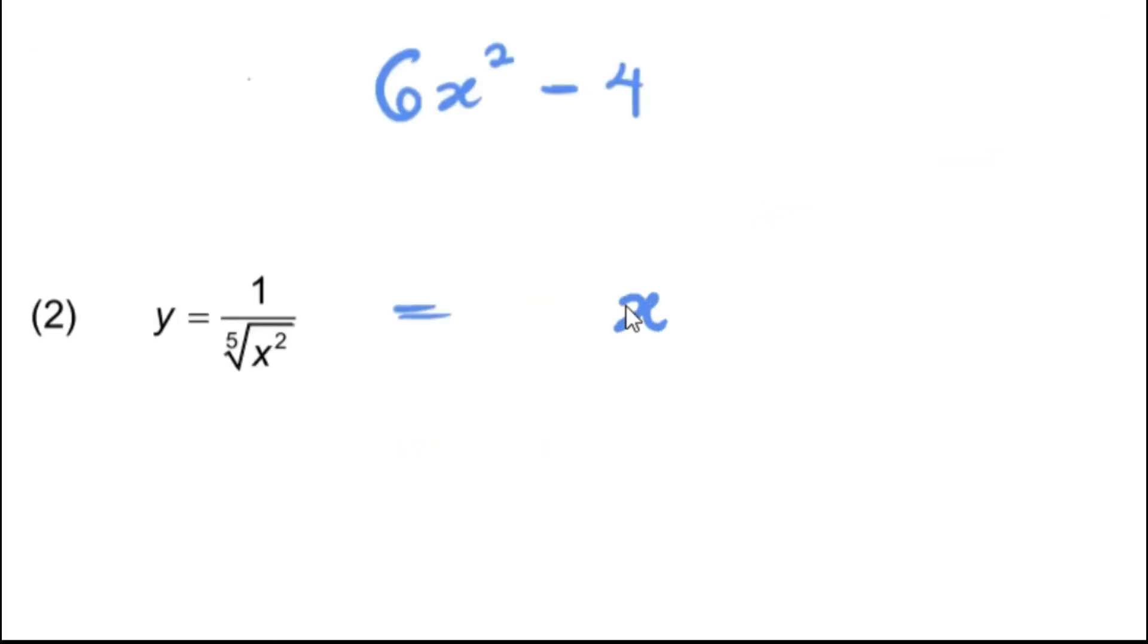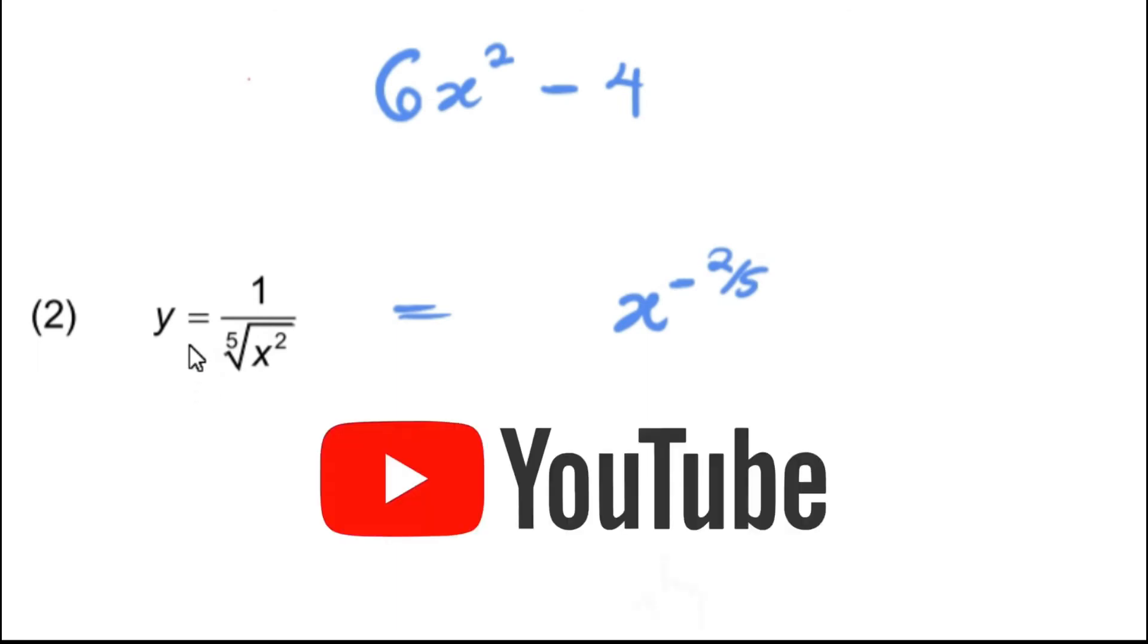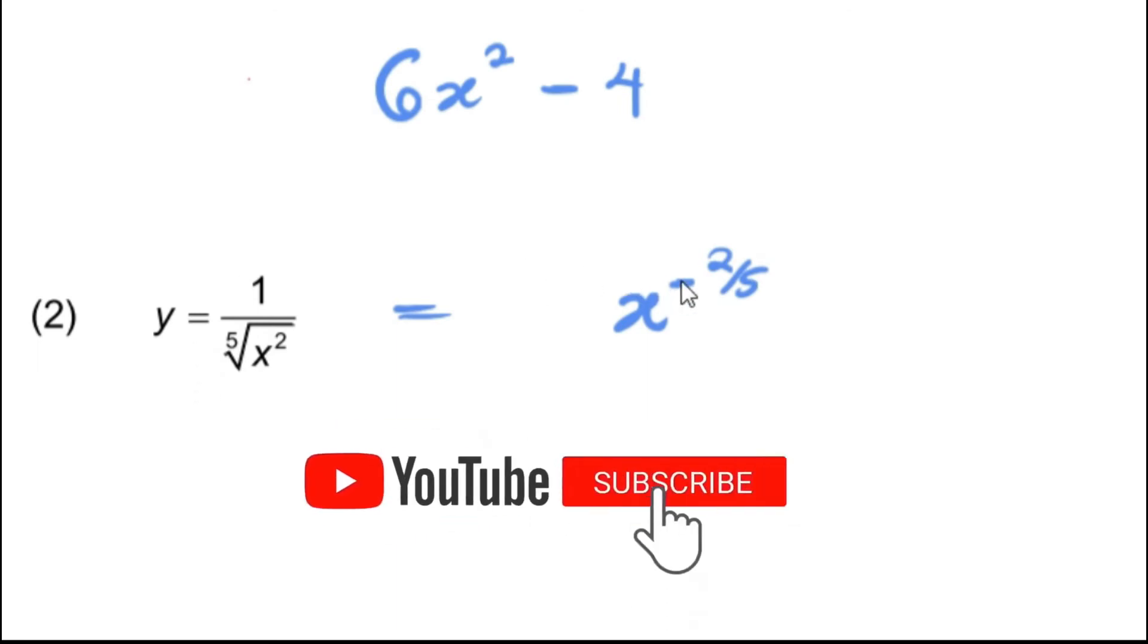This is just a reminder of what you learned in exponents. Whenever you have a square root, it can be rewritten as a fraction, and whenever you have your exponents in the denominator, it can be brought up to the numerator by assigning a negative to it.